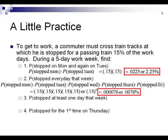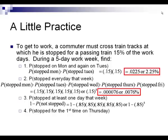Number 3: the probability of getting stopped at least one day that week. Every time you see 'at least' in a probability problem, you work backwards — go in the back door. We do 1 minus the probability of the opposite situation: not being stopped at all. That's 1 − (0.85)⁵ = 1 − 0.4437 = 0.5563, or 55.63%. At least always means: do 1 minus the opposite situation.